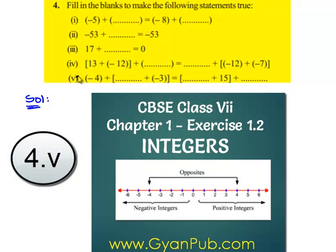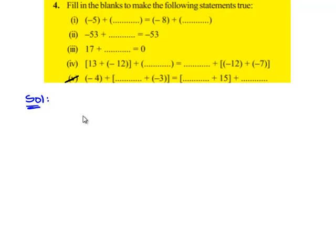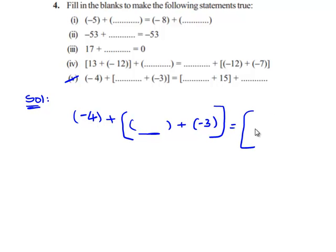We will see the fifth part of the fourth question. The question given is: negative 4 when added to an integer, when added to negative 3, gives the same value when an integer is added to 15 plus another integer.